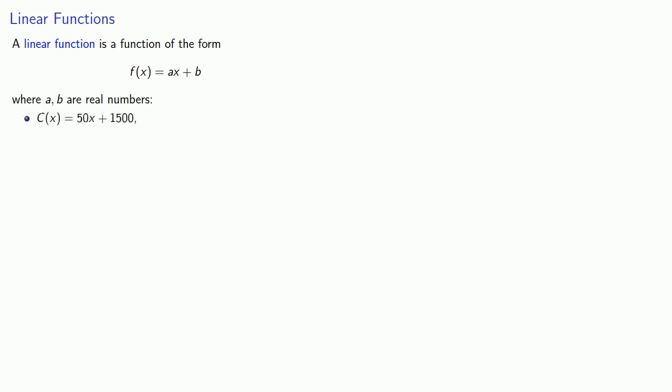So for example, c(x) equals 50x plus 1500, or r(x) equals 5/17ths x minus 4000, or we could change variables, h(t) is 150t minus 400.